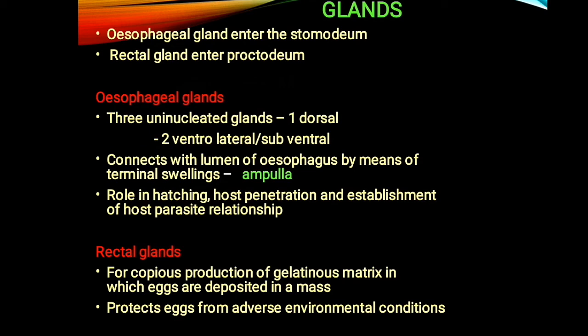Next, about esophageal glands: esophageal glands open into the stomodium and rectal glands open into the proctodeum. In tylenchids there are three esophageal glands; in dorylaimids and inoplatids there are five. The three glands are uninucleated — one dorsal and two subventral — and connect with the intestinal lumen via a terminal swelling called the ampulla. Their role is in hatching, host penetration, and establishment of the host-parasite relationship. The rectal glands are responsible for the copious production of a gelatinous matrix, especially in Meloidogyne, where eggs deposited in this matrix are protected from adverse environmental conditions.